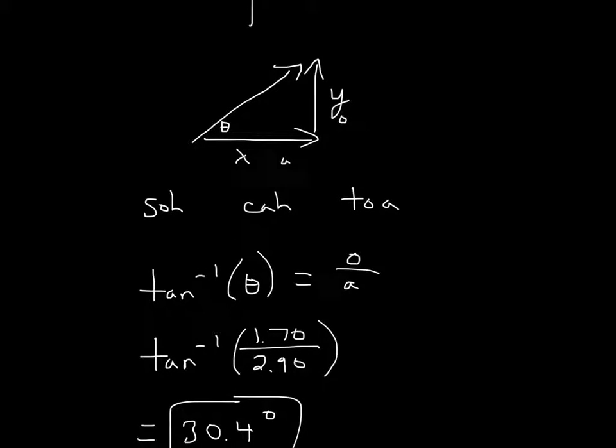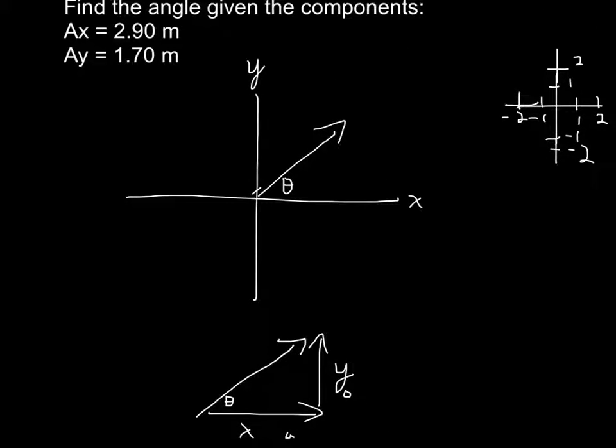So therefore, in the calculator you'd put inverse of tangent, or arc tangent, over opposite, which is 1.7, over adjacent, 2.9. So the opposite would be the Y axis. Opposite is Y axis, so 1.7 over 2.9.